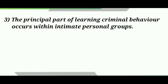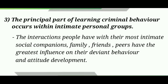The third point is that the principal part of learning criminal behavior occurs within intimate personal groups. Sutherland says that interactions with the most intimate social companions — such as family, friends, and peers — have the greatest influence on deviant behavior and attitude development. If our intimate personal groups are involved in crime, there are high chances of learning criminal behavior from them, because we cannot avoid our parents or social companions and their behaviors. We learn from them, and if they are involved in criminal activities, their communication is mostly related to how to commit crimes.